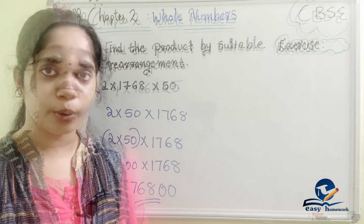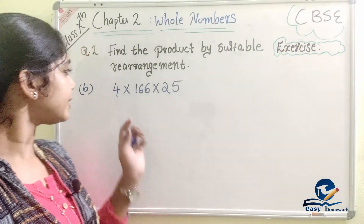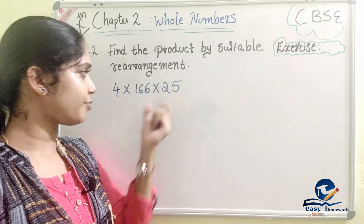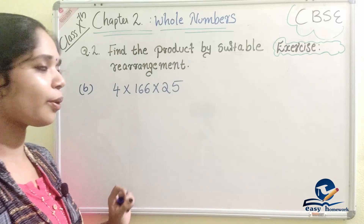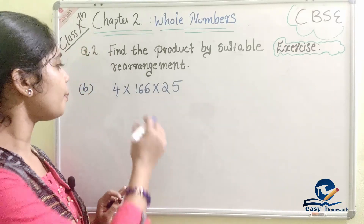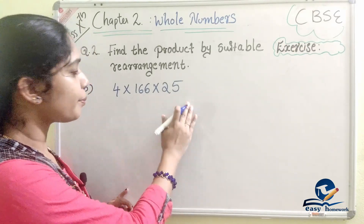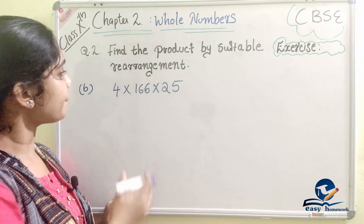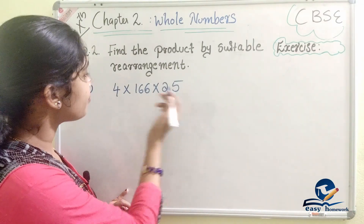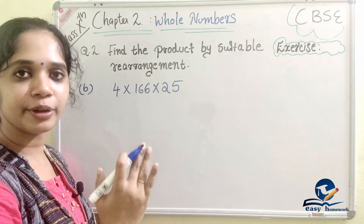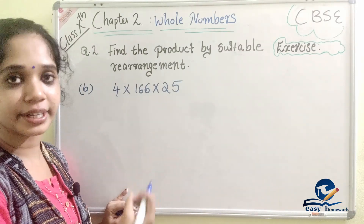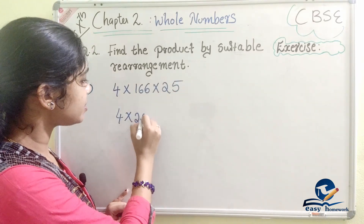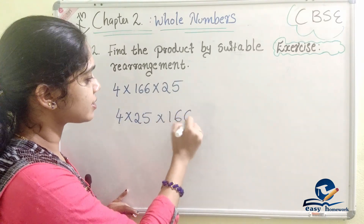Second question: 4 × 166 × 25. The commutative property is applied — multiplication is commutative for whole numbers. We rearrange to 4 × 25 × 166. Since 4 × 25 gives us 100, we change this to: 4 × 25 × 166.